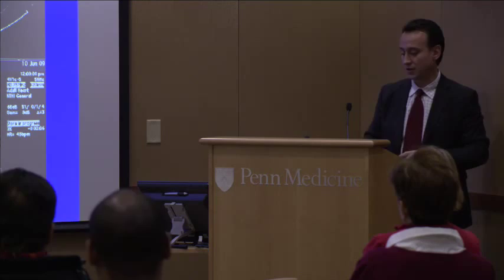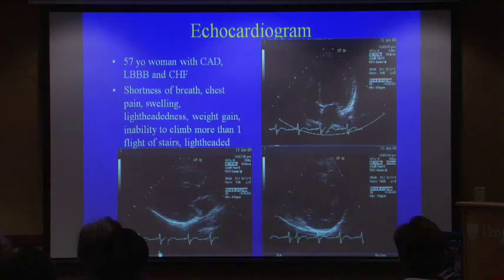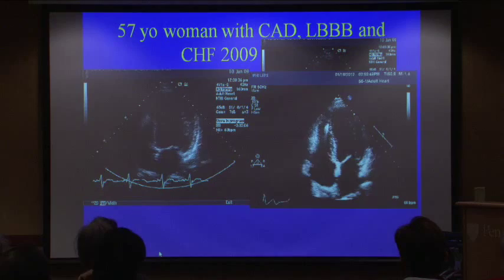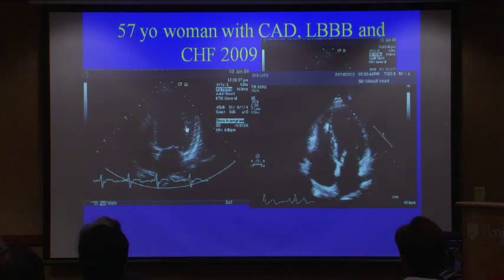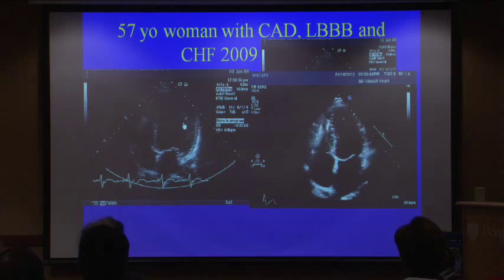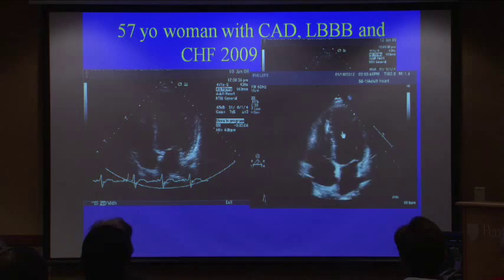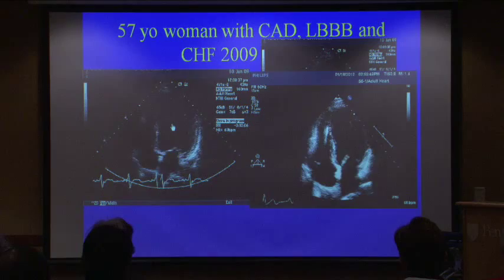This woman was very symptomatic in 2009. We began treating her, and with our interventions — a pacemaker and medications — her ejection fraction improved from about 30 percent to 50 percent within a couple of years. Looking at the 2009 echo, the walls barely move; in the more recent image, you can see the walls coming together much better. Now she can climb two flights of stairs carrying her laundry and feels much better.